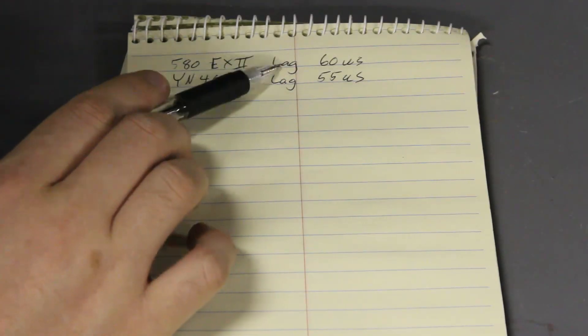Now to make sense of that 115 microsecond number, I looked back to episode number 35 in our blog and I had measured the flash lag for the two flashes I had just used. Now the flash lag is just the amount of time from when that flash is triggered to when it's emitting light. And I found that for the Canon flash it was 60 microseconds and for the Yongnuo flash it was 55 microseconds. Now if you add those times together you get 115 microseconds.